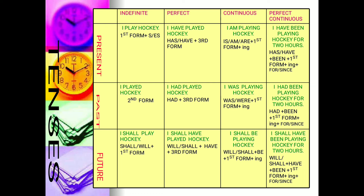Similarly in the past continuous: be, was, been. 'Was' with singular subjects, 'were' with plural subjects. So: I was playing hockey, they were playing hockey, she was playing hockey. Mohan is playing hockey — that is present continuous. Mohan was playing hockey — that is past continuous.